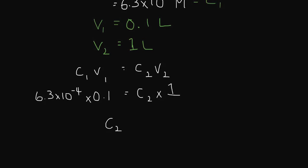So, C2. I'm hoping that you realize that C2 times 1 is the same thing as C2. And you can put that in your calculator. Otherwise, multiplying anything by 0.1 is the same thing as dividing by 10. So, you just add another minus 1 to there. So, it is 6.3 times 10 to the negative 5 molar.